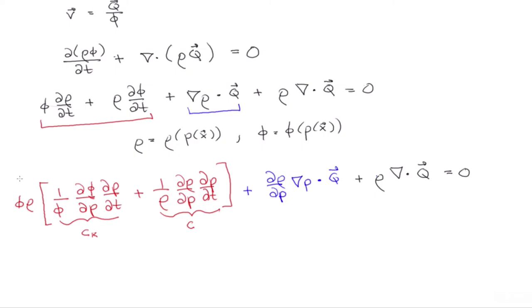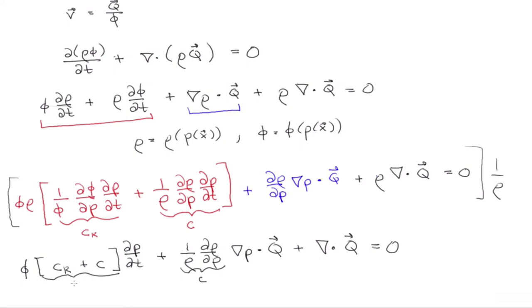So now I'm just going to divide the whole equation by phi and write it all out. We have now phi times the compressibility of the rock plus the compressibility of the fluid, dp dt, plus 1 over rho. And we can see here again, we have compressibility of the fluid. And we're also going to define the compressibility of the rock plus the compressibility of the fluid as the total compressibility.